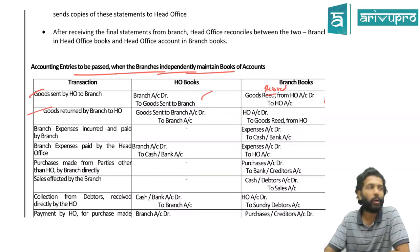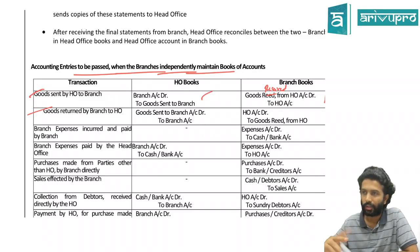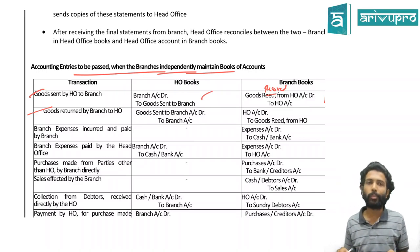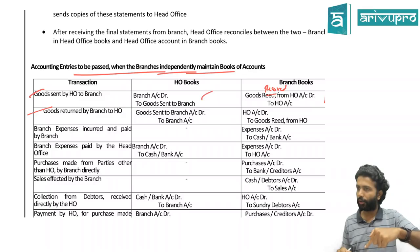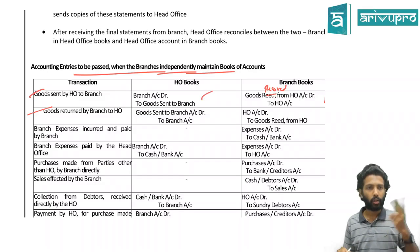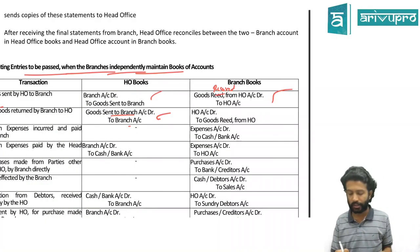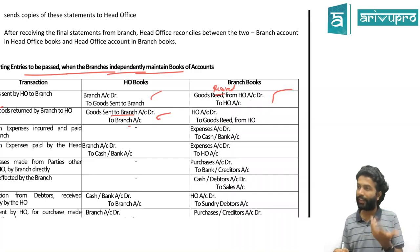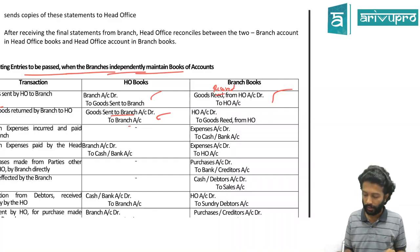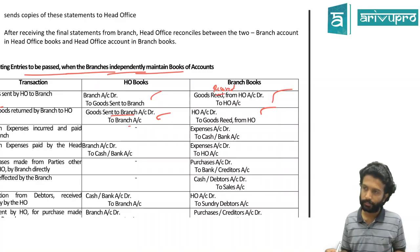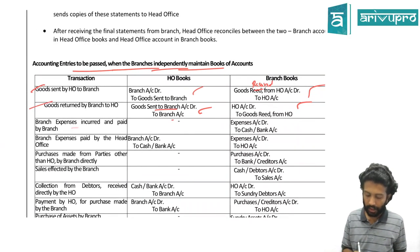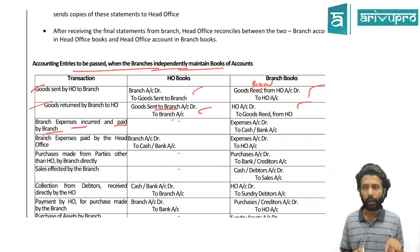Second transaction: goods returned by the branch to HO. This is simply the reverse entry. For HO, the entry is: Goods Sent to Branch Account debit to Branch Account. For the branch, the entry is: HO Account debit to Goods Received from Head Office Account. Third scenario: branch expense incurred and paid by the branch itself. HO has no role, so no entry in HO books. The branch passes: Expense Account debit to Cash or Bank.